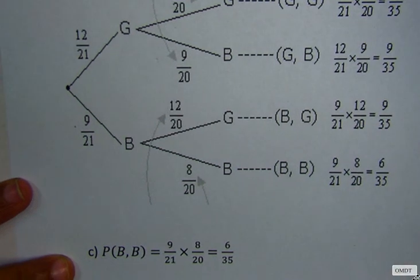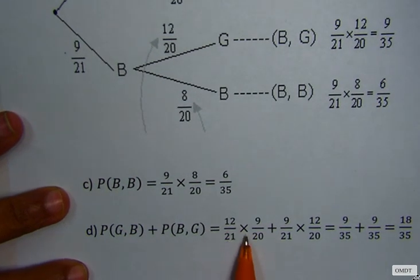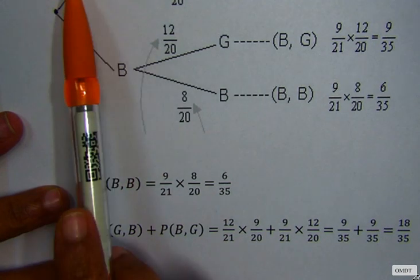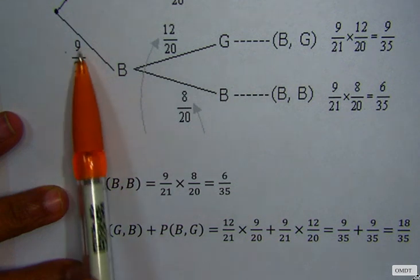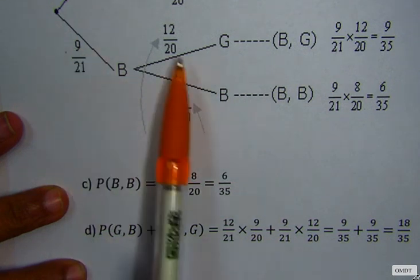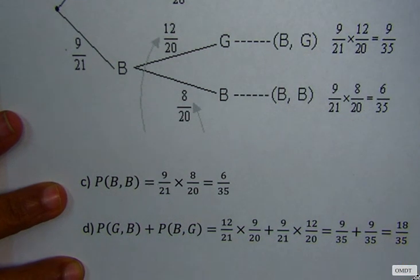So that is what we've done here. So we have 12 over 21 times 9 over 20, that's 12 over 21 times 9 over 20 plus 9 over 21 times 12 over 20. And the answer is 18 over 35. Thank you.